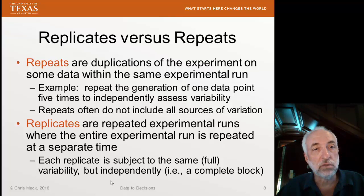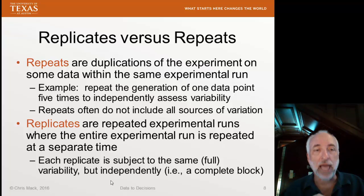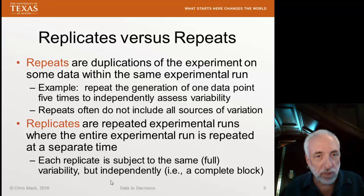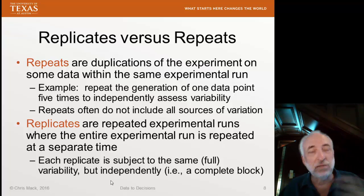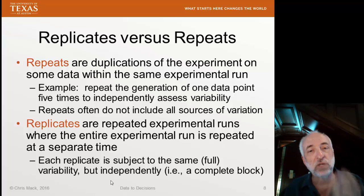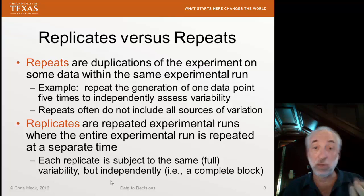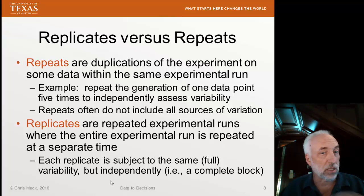The next topic in our design for regression is replicates and repeats. These two terms can be a little bit confusing — they don't mean the same thing. A repeat means we take some of the data in a particular experimental run and repeat it — we collect it again. For example, I have a particular data point, I repeat the experiment to generate that data point five times, and I can use those five measurements independently to assess the variability of my data, independently from whatever model I might be using.